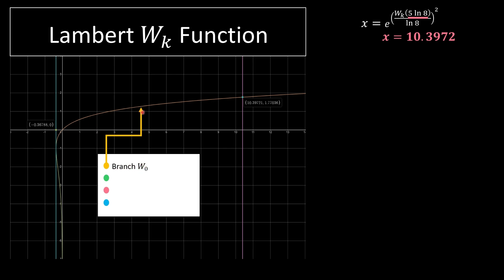So branch W of 0 is this orange line, branch W of negative 1 is this green line. It goes down to the bottom and it goes right next to the y-axis. Now our x is 10.3972 which is this pink line and the asymptote is negative 0.368. So this blue line is that.